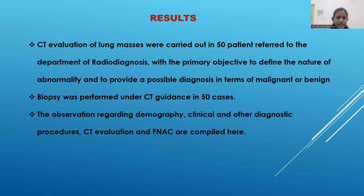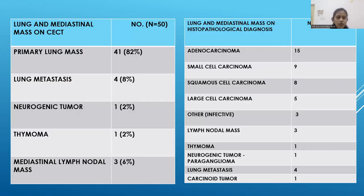Results: CT evaluation of lung masses was carried out in 50 patients, with the primary objective to define the nature of the abnormality and to provide a possible diagnosis in terms of malignant or benign lesion. Biopsy was performed under CT guidance in all 50 cases. On CECT, 82% of the cases were primary lung masses, 8% were diagnosed as lung metastasis, 2% were neurogenic in origin, 2% were thymoma, and 6% were mediastinal lymph nodal masses.